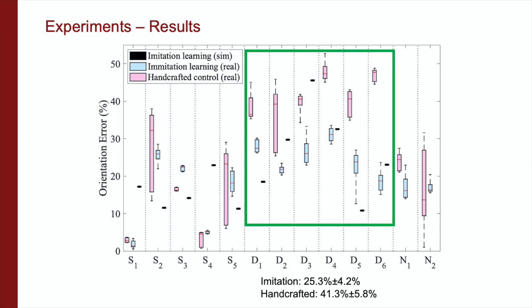For the more difficult transformations, the imitation learning outperformed the handcrafted control policy across all six trials by a lower percent average error. Three of these trials, D1 to D3, include target poses not trained in simulation.